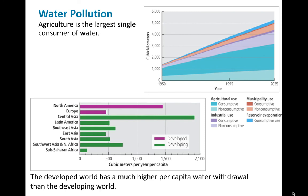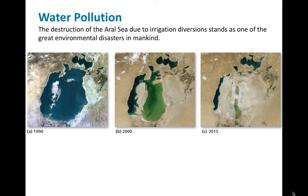Looking at water pollution, agriculture is the largest single consumer of water and can be fairly destructive to the environment — both water and land. The developed world has a much higher per capita water withdrawal than the developing world. North America, specifically Canada and the United States, are leading agricultural countries that use a lot of water. Water pollution can also look like loss of water due to irrigation — the Aral Sea in Central Asia is essentially gone. From 1990 to 2015, so much water was used for irrigation and crops that the sea is now mostly disappeared.